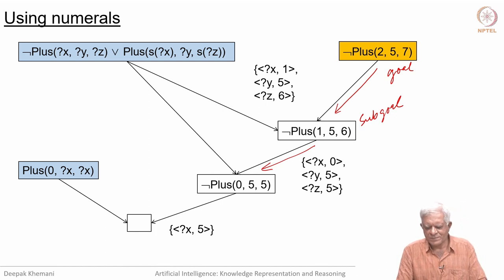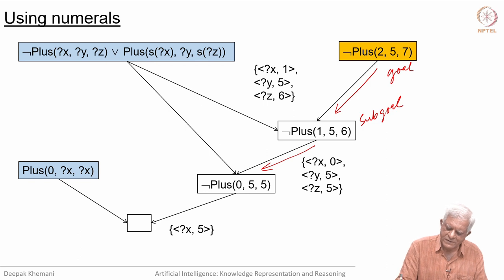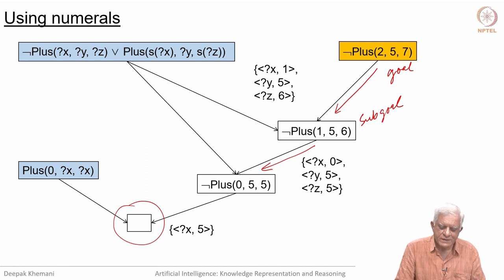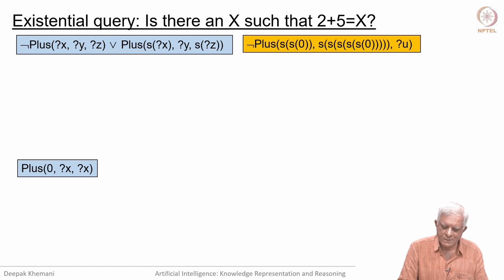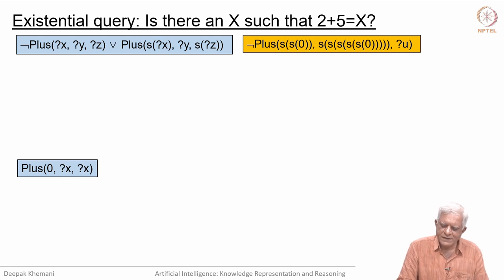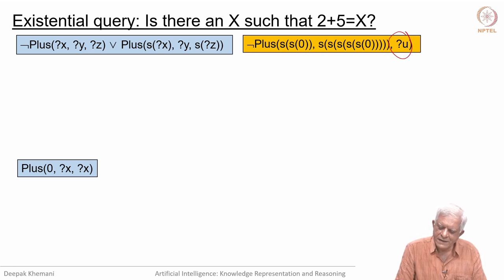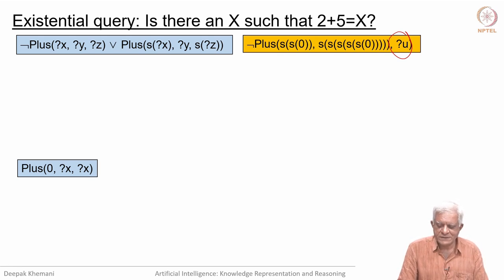We gave '2 plus 5 is equal to 7' as a goal, negated it, added it to the set of clauses, and eventually derived the null clause — that is how the resolution refutation works. Now let us answer the query: is there an x such that 2 plus 5 is equal to x? The program is still the same; the only difference is the query has a variable. Remember that variables in queries are existentially quantified.